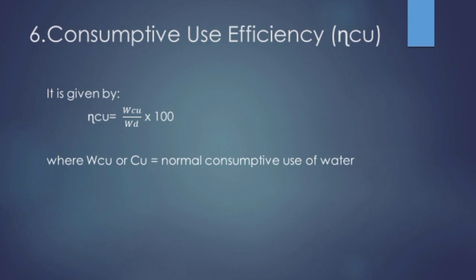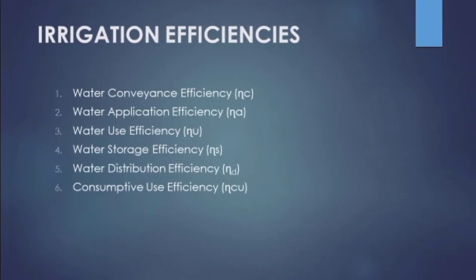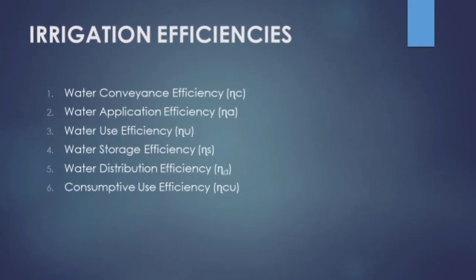The sixth and last is consumptive use efficiency — from how much water is delivered to the field, how much water was consumed effectively. It is WCU (consumptive use of water) divided by WD (water delivered), multiplied by 100. These six efficiencies measure different parameters of irrigation performance. Keep in mind there are six efficiencies and pay attention to the factors and equations for each.